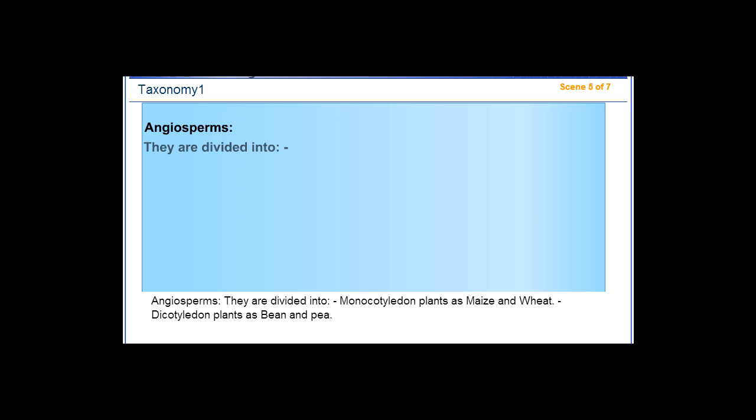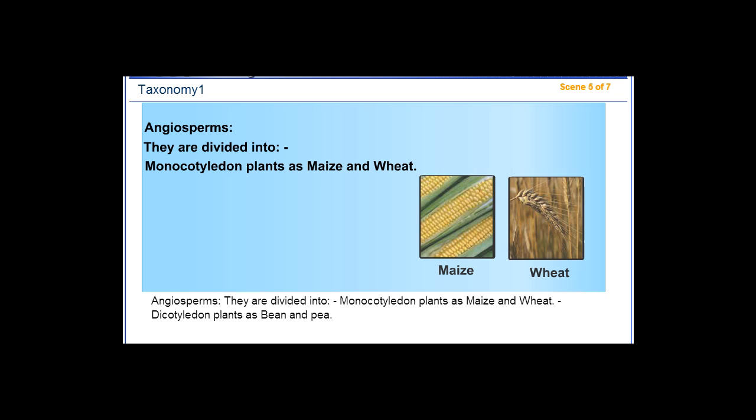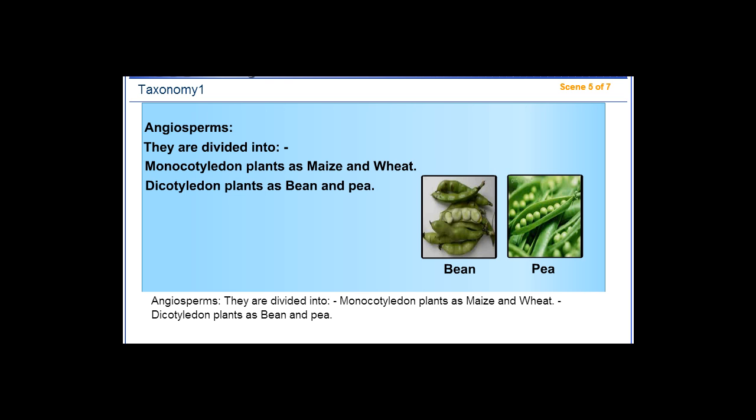Angiosperms: They are divided into monocotyledon plants, such as maize and wheat, and dicotyledon plants, such as bean and pea.